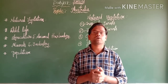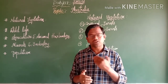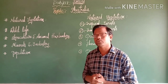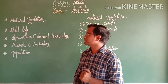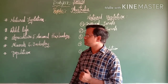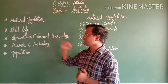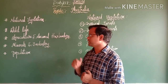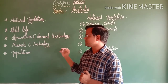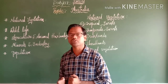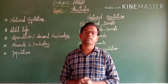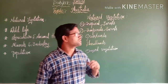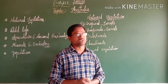Today we are going to extend that lesson and discuss a few important points: natural vegetation, wildlife, agricultural and animal husbandry, minerals and industries, and the population of Australia continent. So let us discuss one by one, starting with natural vegetation.